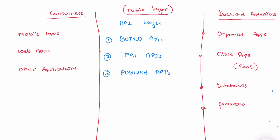The next step is monetize. If you want to generate revenue out of your API services, you can monetize them. This is the step where you configure the monetization aspects for your service. Once it is monetized, the consumers will start consuming your services — once the API is ready, mobile applications or consumers can consume your APIs.